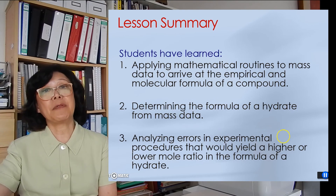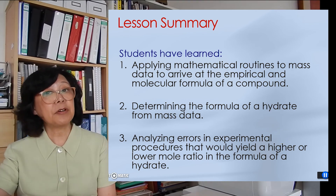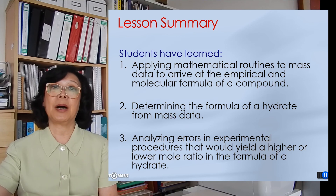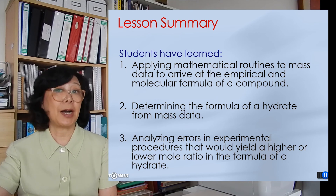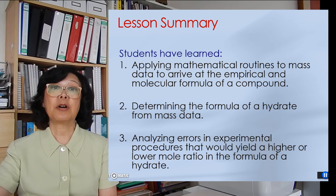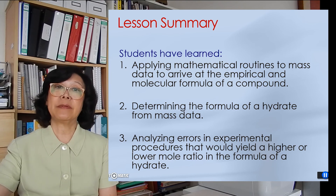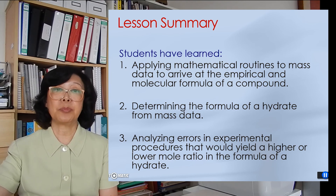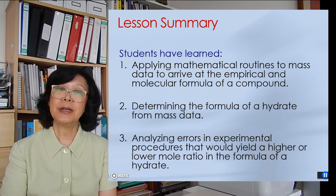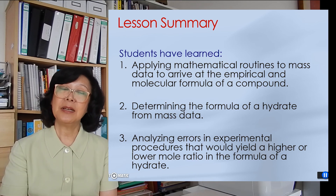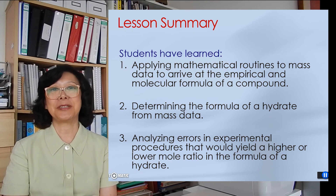Let's summarize what we have learned today. First, we learned how to apply mathematical routines to mass data to arrive at empirical formula and molecular formula of a compound. Second, we discussed how to perform an experiment to find the formula of a hydrate and use mass data to calculate it. Finally, we analyzed errors to find out what kind of error could give us either a larger or smaller mole ratio of water in the formula. I hope you found the lesson helpful and I hope to see you next time. Please be sure to leave comments — any feedback from you will be invaluable to us. Thank you.